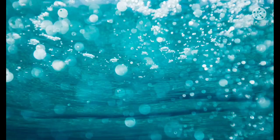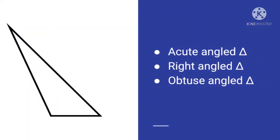For the next few questions, you have to identify the different types of triangles. Question number 4: A triangle is given to you — you have to identify it. Is it an acute angled triangle, a right angled triangle, or an obtuse angled triangle? Identify it and write the answer in your notebook.